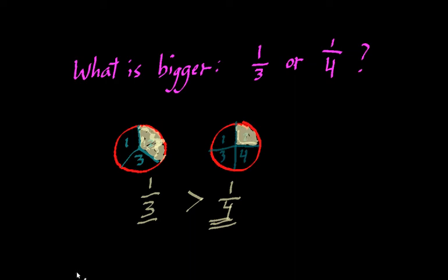For example, if I took a pizza pie and divided it up into three slices, those slices would each be bigger than if I took that same pie and divided it into four slices and gave you just one slice. More extremely, if I divided a pizza into ten slices and gave you one, that would be much smaller than if I divided it into two big halves and gave you one. In general, a smaller number on the bottom means the resulting fraction is bigger.